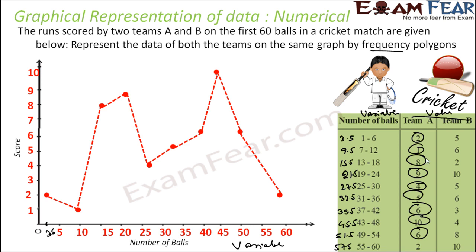I have not drawn the frequency polygon for team B — you can do this yourself. Just plot (3.5, 5), then (9.5, 6), and so on, and you get one more frequency polygon for team B.